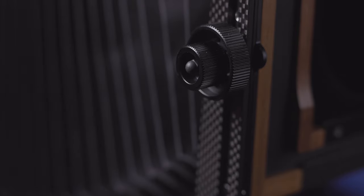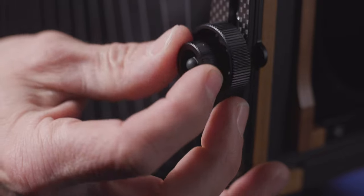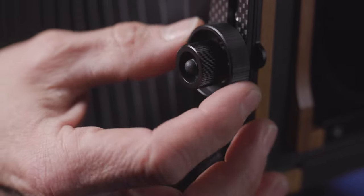In my opinion, the most exciting part about the front standard are the independently controlled mechanisms that allow for the lens tilt and rise and fall. The large inner knobs control rise and fall while the outer, smaller knobs are used to adjust and lock the amount of lens tilt.